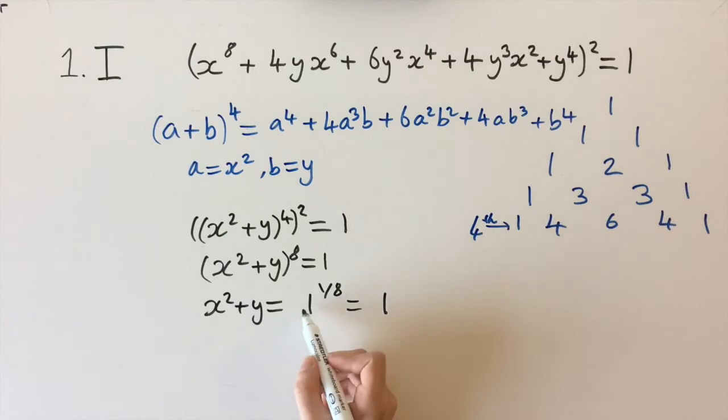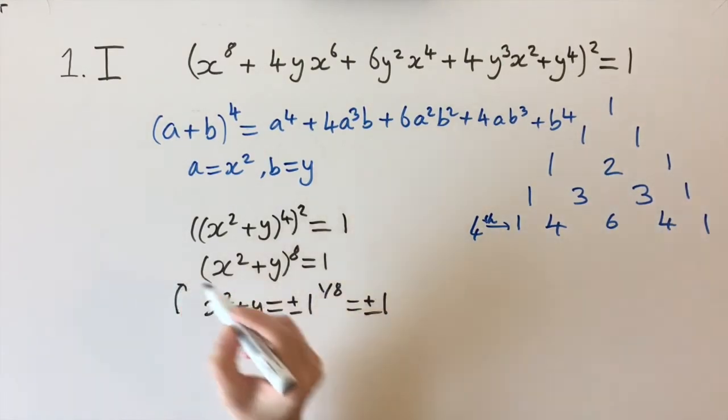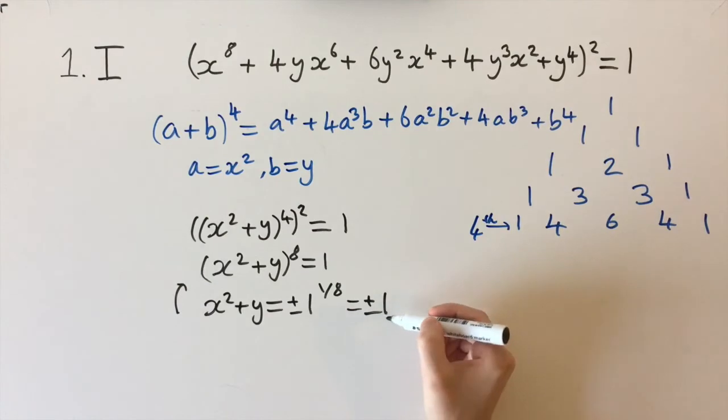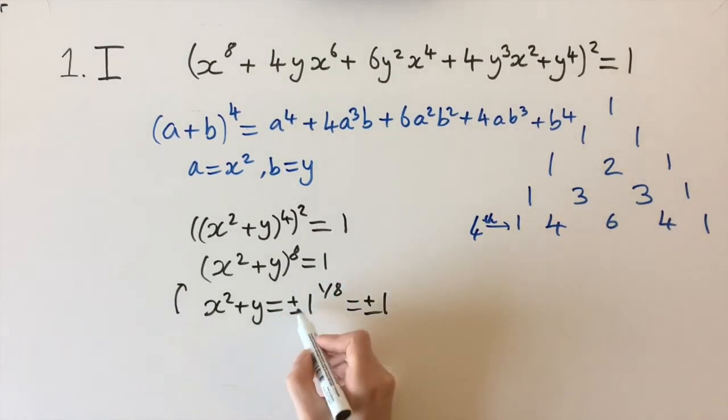But we need to be careful because we need to take the plus or minus solution here. If we were to take the power of 8 back, so if we're thinking about going back up to this equation, we would put everything to the power of 8, but since 8 is an even number, minus of the right-hand side is also a solution.